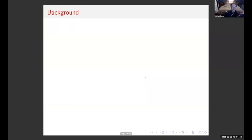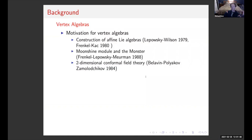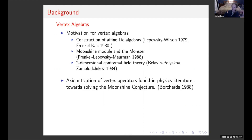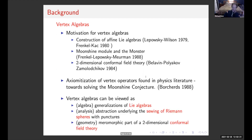Here's a little bit of background. Some motivation for vertex algebras came from construction of affine Lie algebras by Lepowski and Wilson, Frenkel-Kac, the moonshine module and the monster — from the book by Frenkel-Lepowski-Meurman — and from two-dimensional conformal field theory in physics.